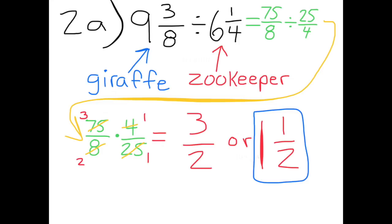Nine and three-eighths divided by six and one-fourth is seventy-five-eighths divided by twenty-five-fourths, which is the same as seventy-five-eighths times four twenty-fifths. Simplified, that becomes three-halves times one, which is three-halves, or one and one-half. The giraffe is one and one-half times as tall as the zookeeper.